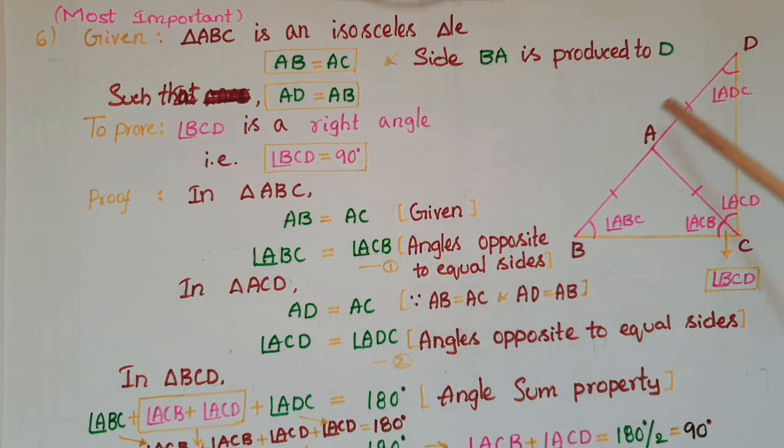We know that AB is equal to AC and AB is equal to AD, so AD is equal to AC. Angles opposite to equal sides are equal, so angle ACD is equal to angle ADC in this triangle.